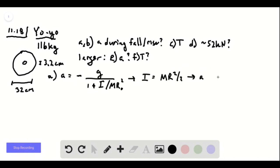So our acceleration is going to be negative g over 1 plus r over r naught squared, divided by 2, and r over r naught is 10.